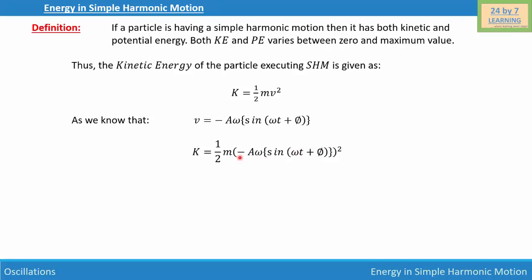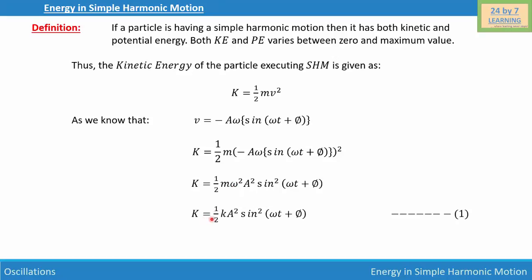Squaring the term, the negative becomes positive, and we get K = ½mω²A² sin²(ωt + φ). Since mω² = k (the spring constant), we can write kinetic energy as K = ½kA² sin²(ωt + φ). This is equation number one.